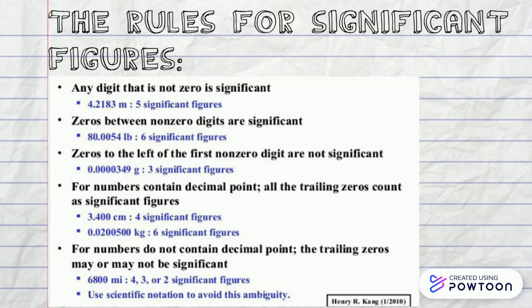For numbers that contain decimal points, all the trailing zeros count as significant figures. For numbers that do not contain decimal points, the trailing zeros may or may not be significant.